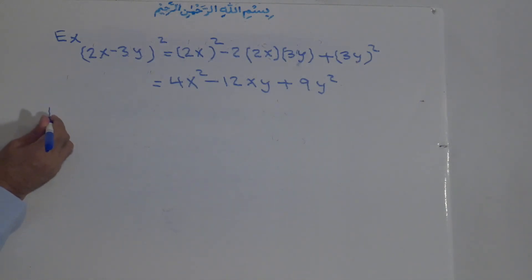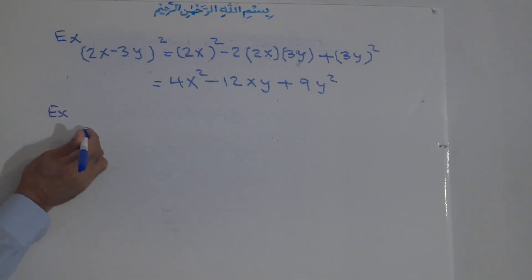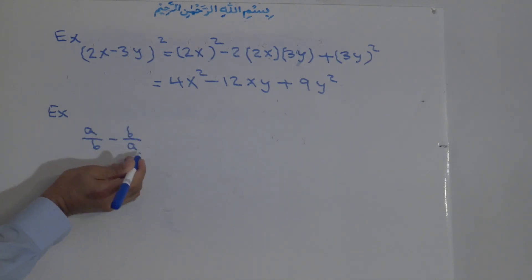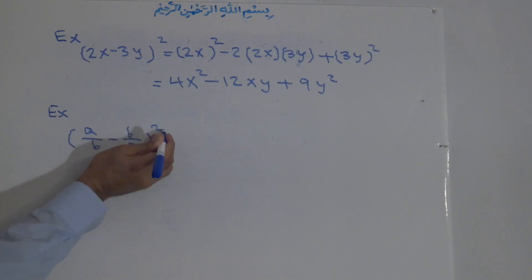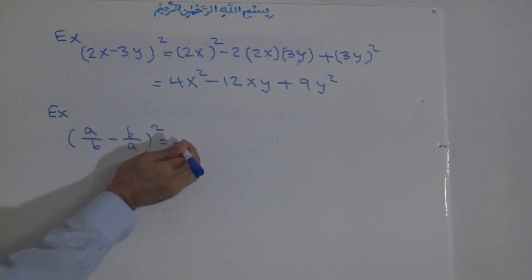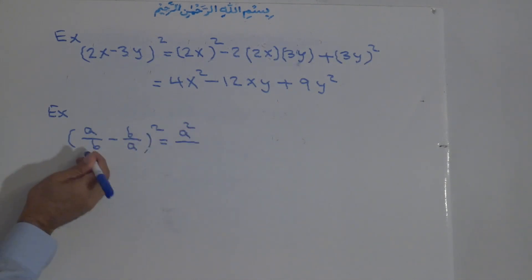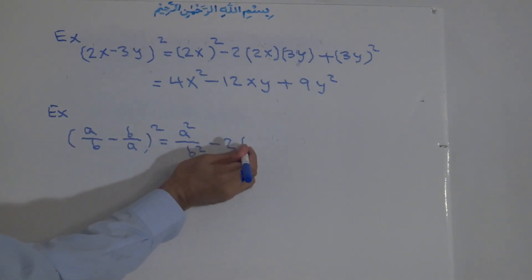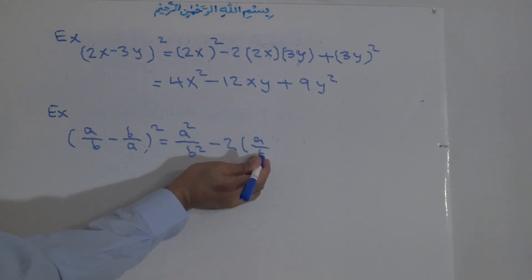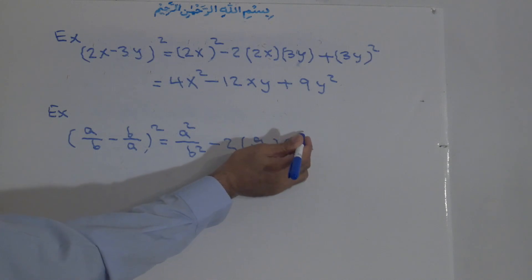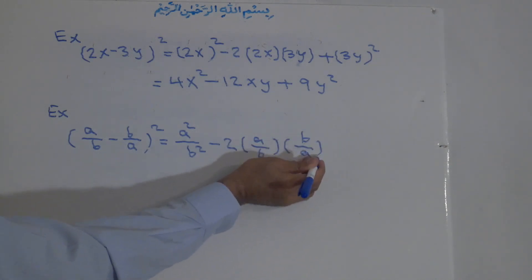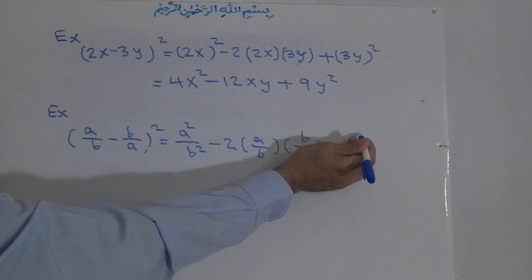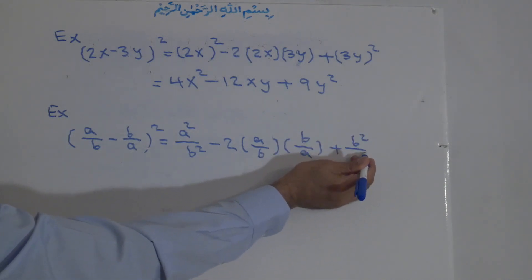Another example: a over b minus b over a, to the power of two. This equals the first term squared: square of a is a squared, square of b is b squared. Minus 2 times the first term a over b times the second term b over a. Plus the square of the last term: b squared over a squared.